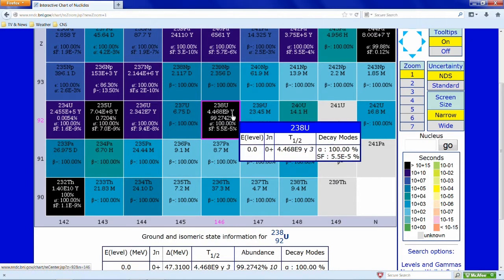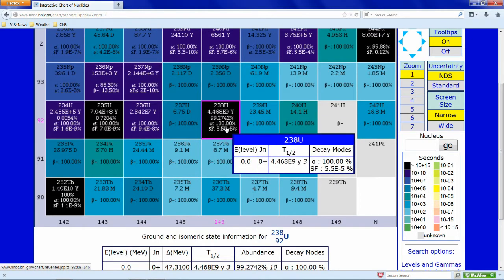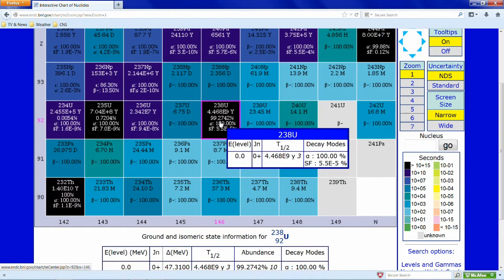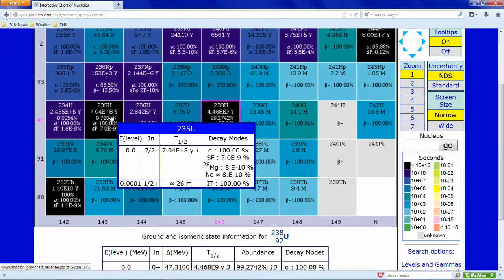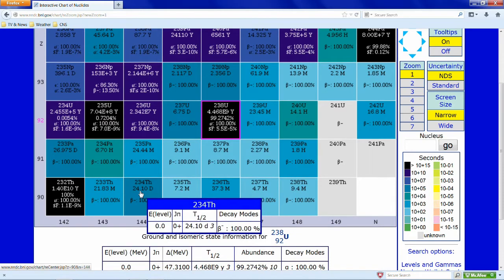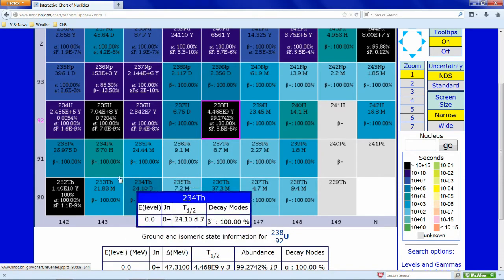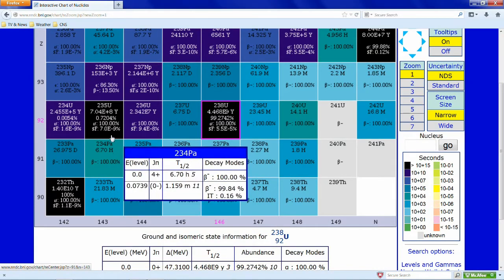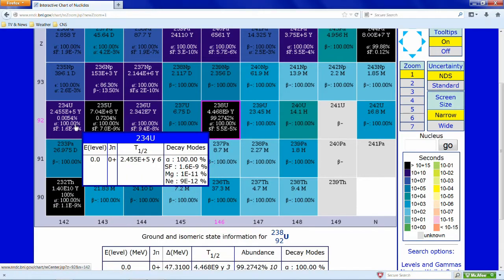The values in the box include half-life, isotopic abundance, and decay mode. Alpha decay reduces the number of neutrons by 2 and the number of protons by 2, moving to the left, diagonally down, two rows and two columns, from uranium-238 to thorium-234.